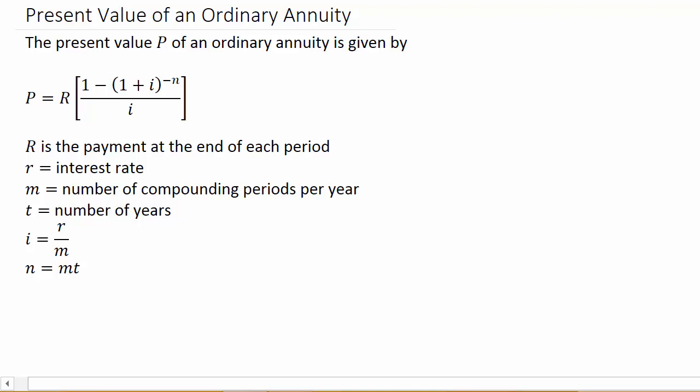Alright, so this video we're going to look at present value of an ordinary annuity. The present value P of an ordinary annuity is given by this formula: P equals R times 1 minus 1 plus I to the negative N divided by I.